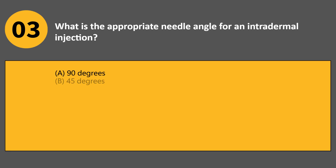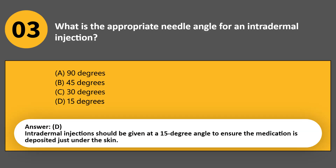What is the appropriate needle angle for an intradermal injection? A. 90 degrees. B. 45 degrees. C. 30 degrees. D. 15 degrees. Answer D. Intradermal injections should be given at a 15-degree angle to ensure the medication is deposited just under the skin.